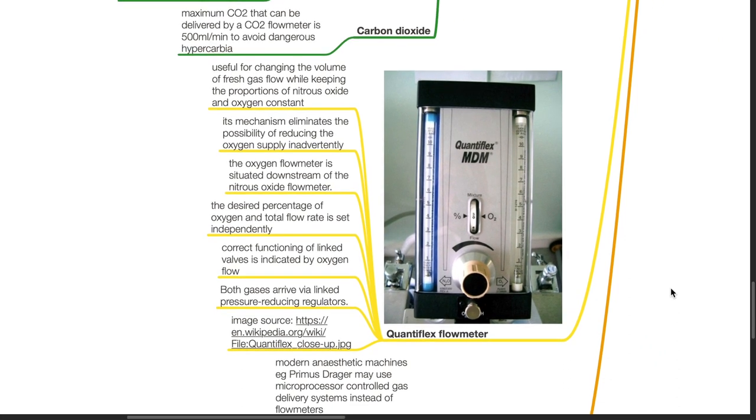Quantiflex flow meter: It is useful for changing the volume of fresh gas flow while keeping the proportions of nitrous oxide and oxygen constant. Its mechanism eliminates the possibility of reducing the oxygen supply inadvertently.